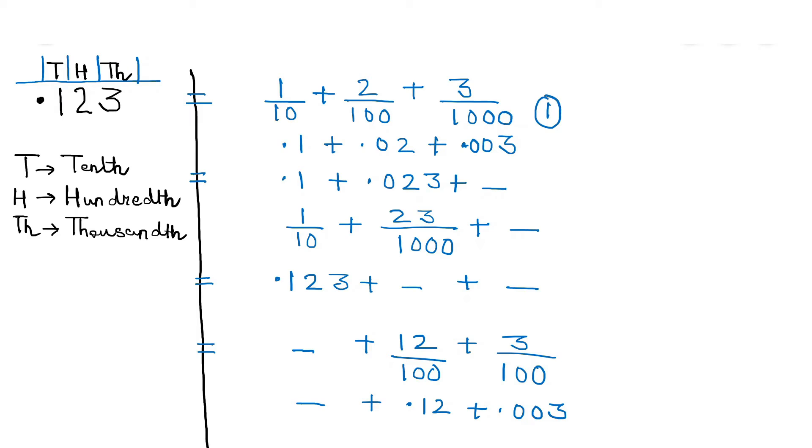So this is the first way. Can I say 1 tenth? Because I hope you know that here we have taken T as the 10th place, H as the 100th place and TH as the 1000th place. So the first way here is 1 tenth, 2 hundredths and 3 thousandths. Now to be more precise here we can avoid writing S here because 1 is singular. So in that case S should be avoided.